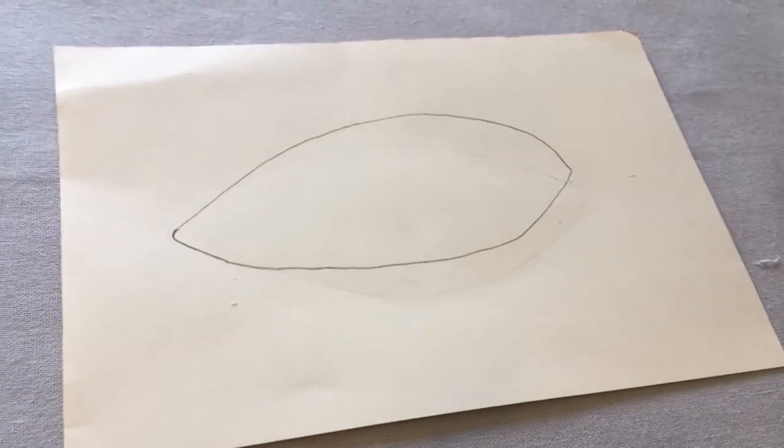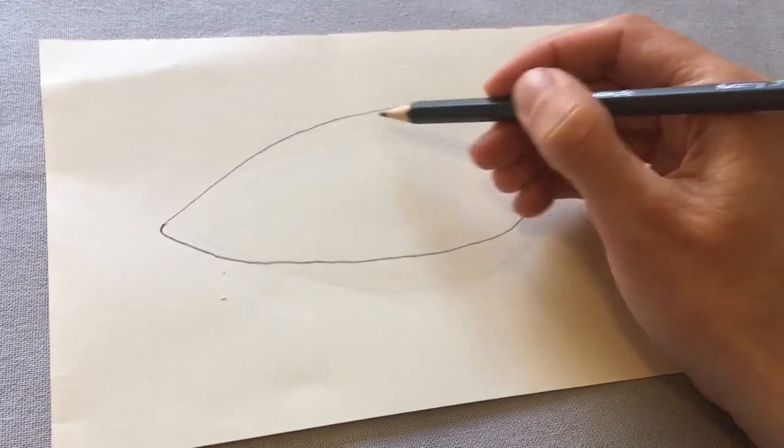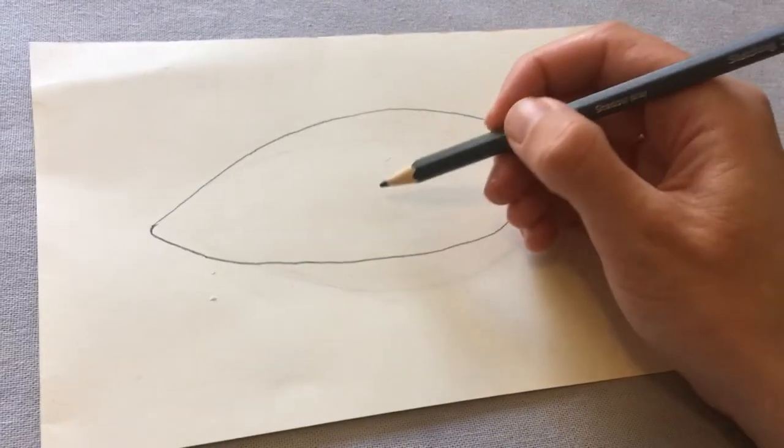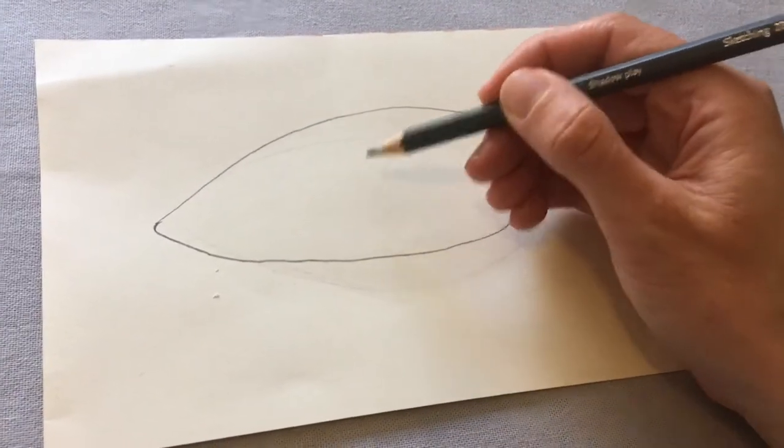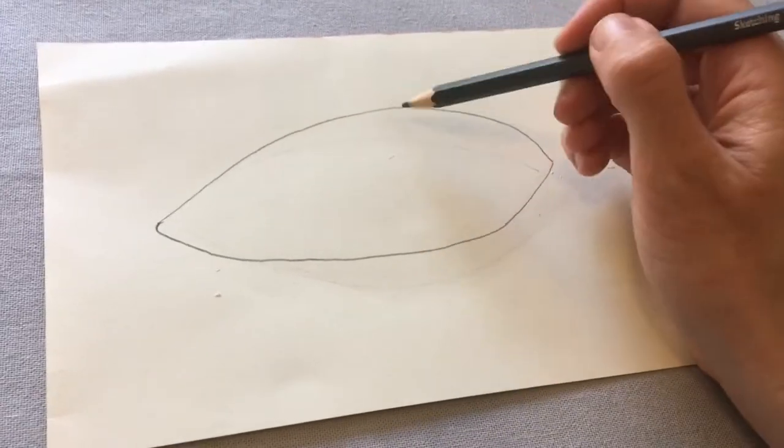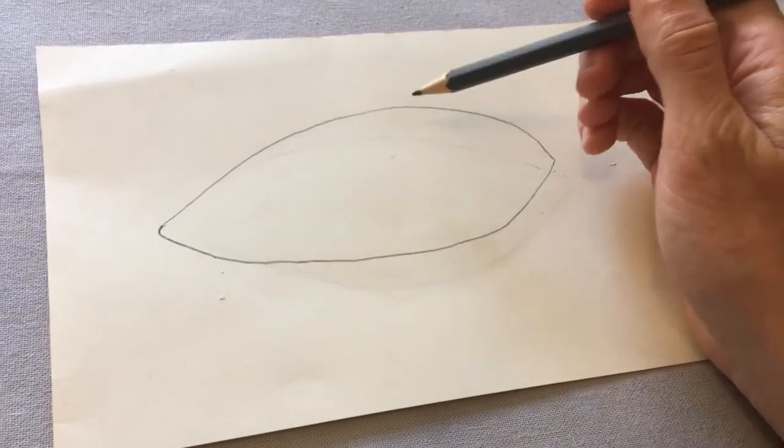Now the next thing that we're going to look at is the pupil and the iris of the eye. The pupil is the little black hole in the middle that you can see, and the iris is the color that you have around it.